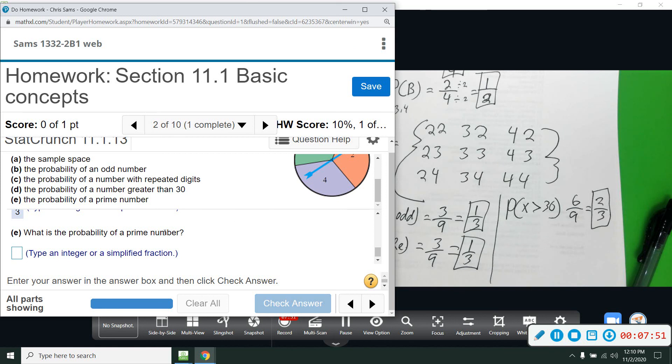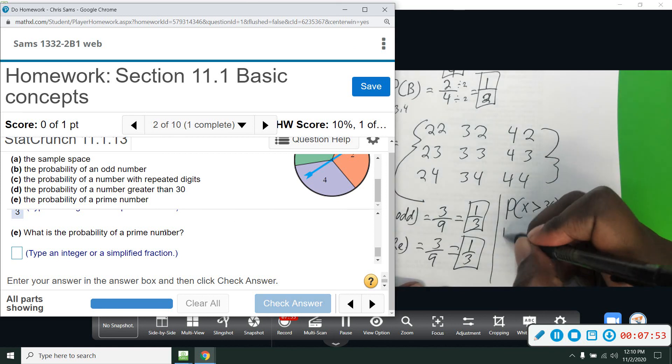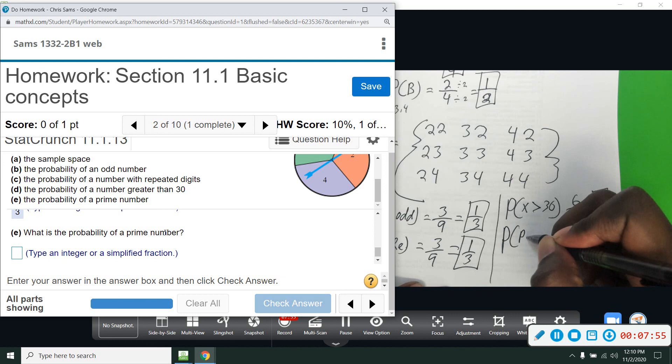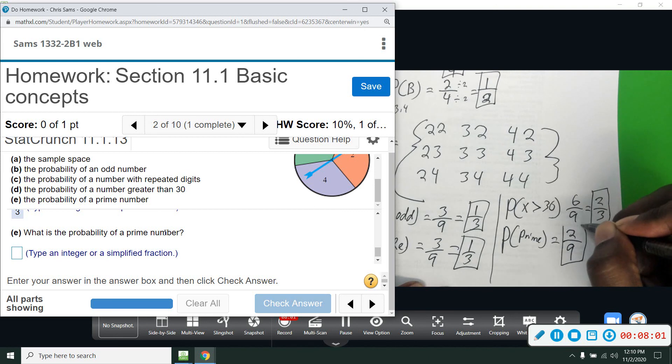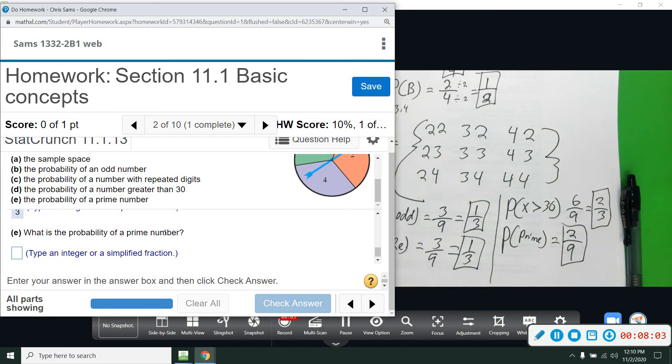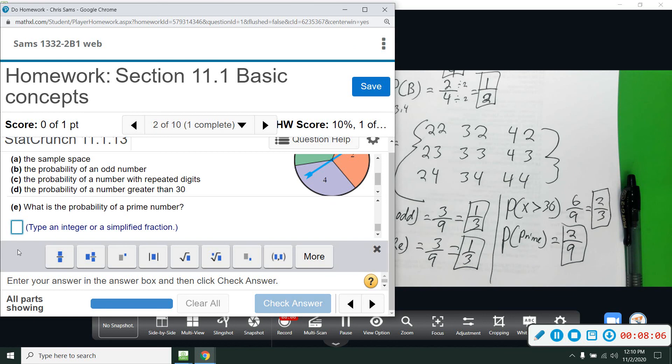So we have two numbers that are prime. Probability of prime, we have 2 out of 9, and that will not reduce. 2 is even, 9 is odd, they have no common factors. So 2 out of 9.